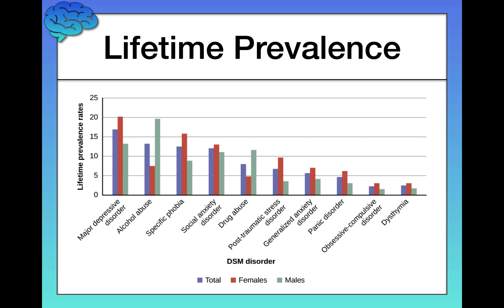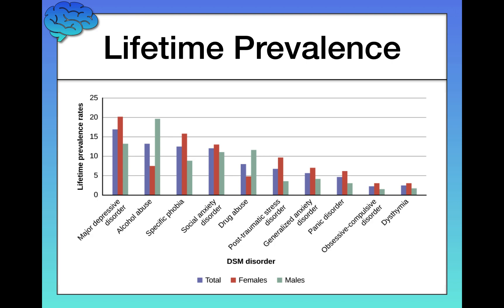Looking at this chart, on the y-axis you're looking at a percentage — the percentage of people who get each of these different DSM disorders on the x-axis at some point in their lives. These are pretty common: major depressive disorder, for example, affects about 20% of women and about 14% of men at some point in their lives. Psychological disorders are common and widespread, something we need to keep in mind.